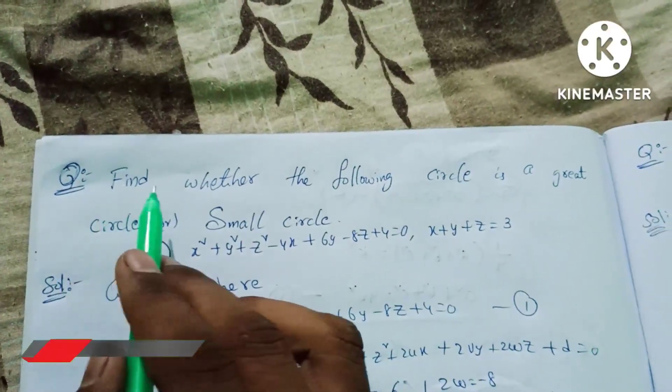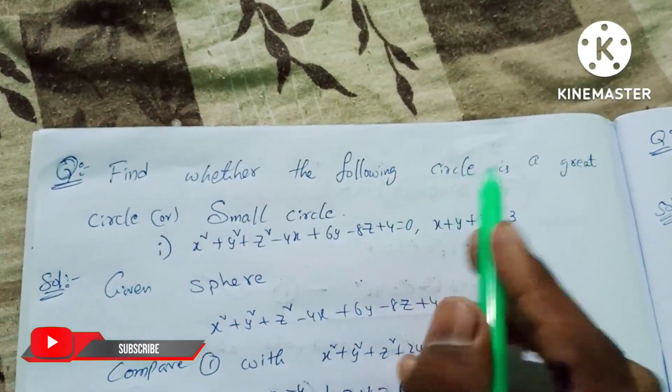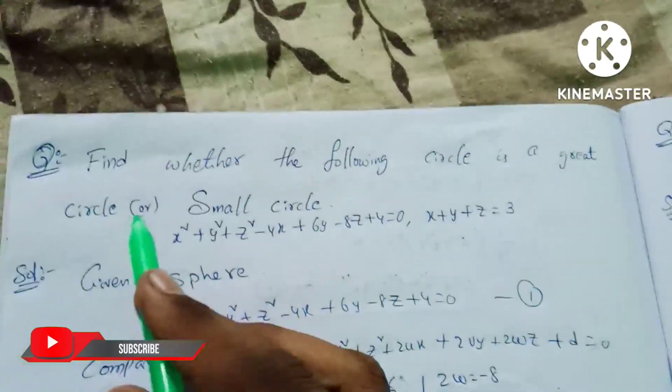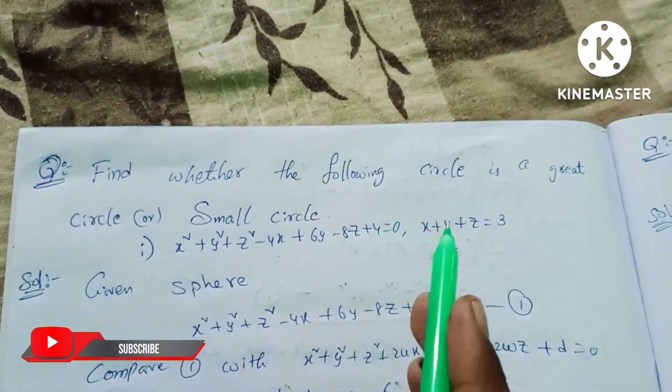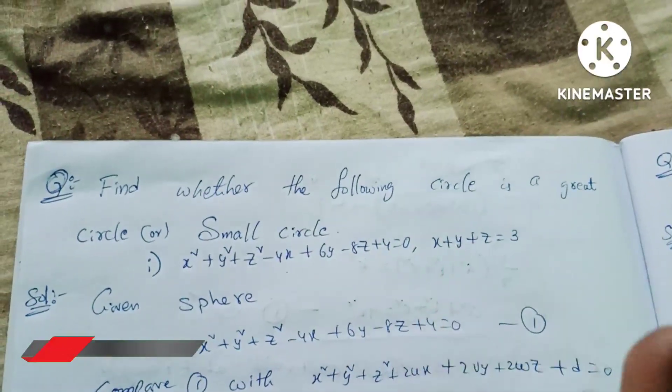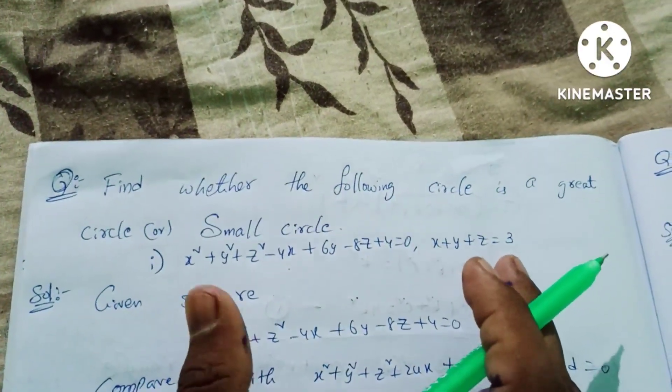Question: find whether the following circle is a great circle or a small circle. We are given a sphere equation and a plane equation, and we need to determine if the intersection is a small circle or a great circle.